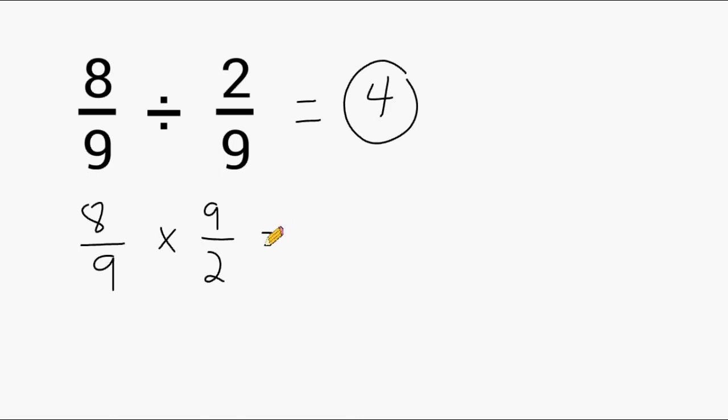Now, at this point, we can simply multiply the numerators together, and that would give us a product of 72. And multiplying the denominators together would give us a product of 18. And when we divide 72 by 18, that would give us 4.